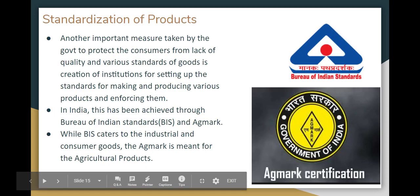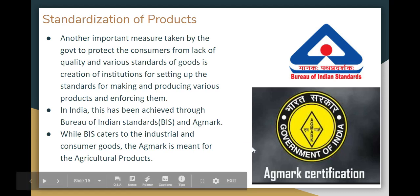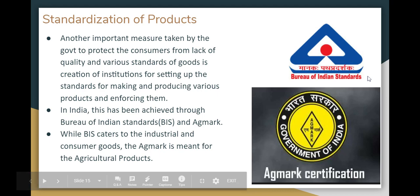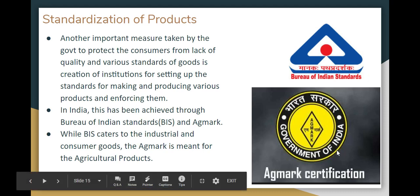Now, on the 15th slide: Standardization of Products. This is a measure the government takes to protect the consumer. Institutions create and set standards for producing products. In India, the relevant institutions are the Bureau of Indian Standards (BIS) and Agmark. BIS covers Industrial and Consumer Goods, while Agmark covers Agricultural Products.